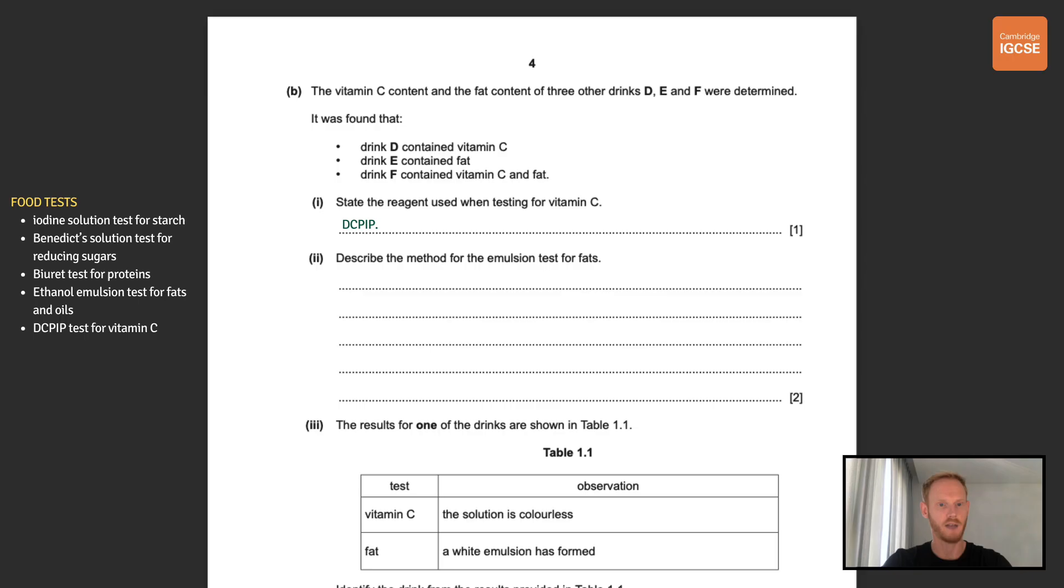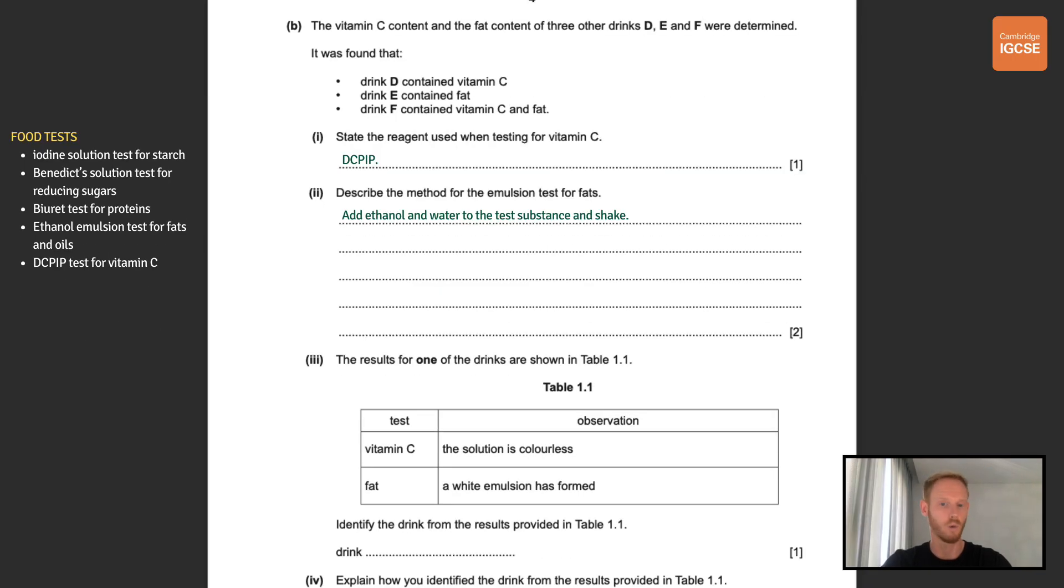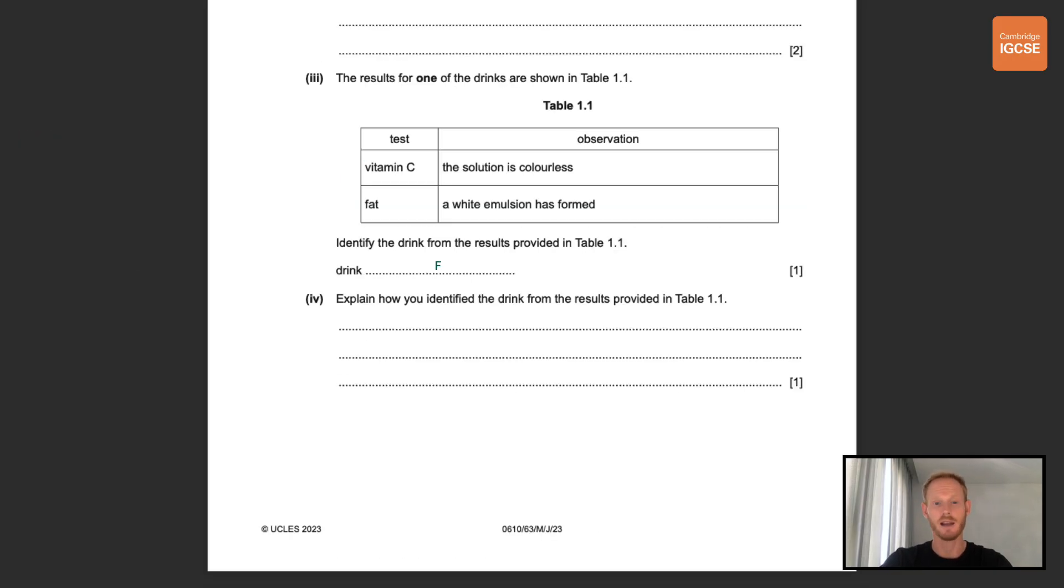Describe the method for the emulsion test for fats. So the emulsion test for fats and oils involves adding ethanol and water to the test substance and shaking. Next the results for one of the drinks are shown in table 1.1. Identify the drink from the results provided. So the drink in question turned colourless when tested for vitamin C and produced a white emulsion when tested for fat. So DCPIP turns from blue to colourless in the presence of vitamin C so we have a positive result there, and mixing ethanol and water with fats results in the formation of a white emulsion. So all we need to do is to identify the drink that contained both vitamin C and fat and that was of course drink F. The next part asks you to explain how you identified the drink and the answer to that is simply that both vitamin C and fat were found to be present in the drink.